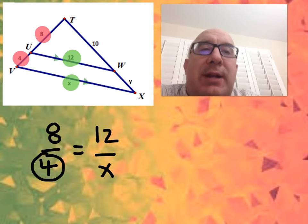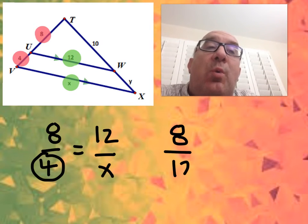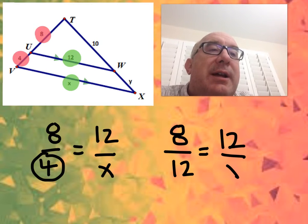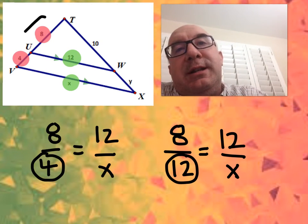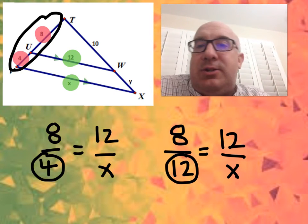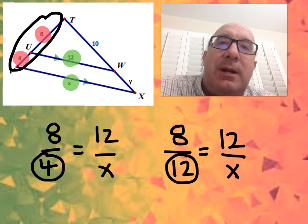So the proper way to do that would be 8 is to 12 as 12 is to x. Now where does this 12 come from? Well, it's the entire side. So 8 is to 12 as the 12 is to the x. That's how you set this one up.